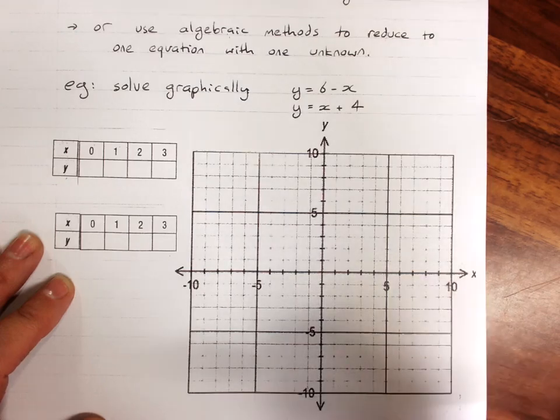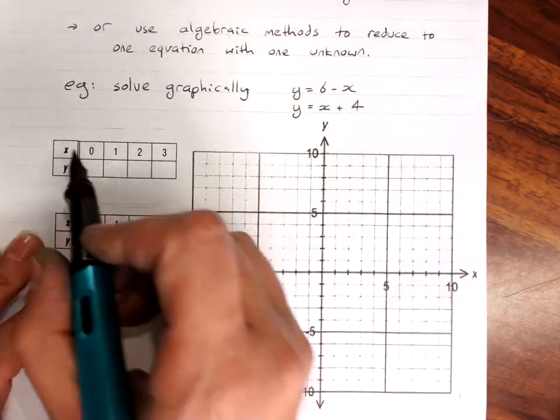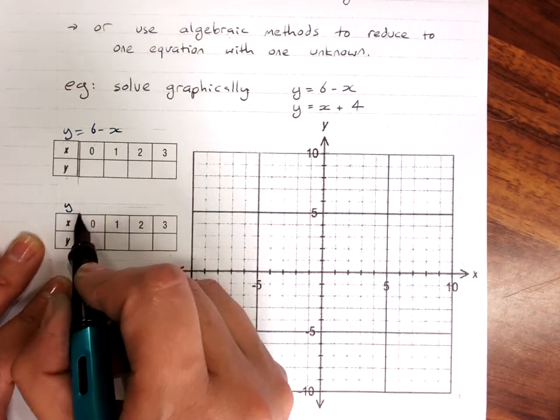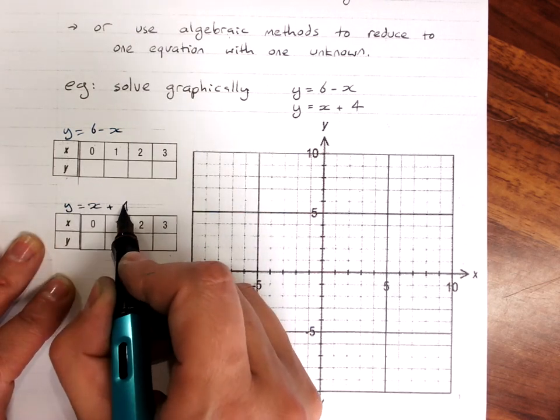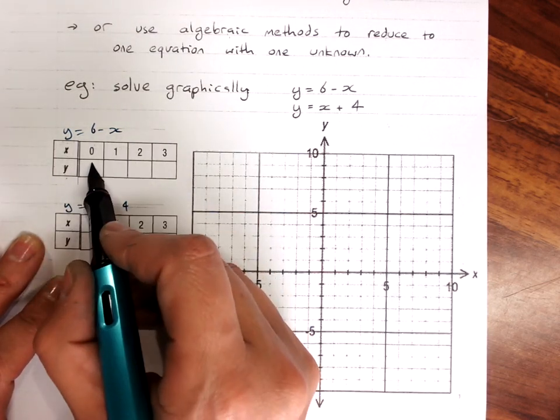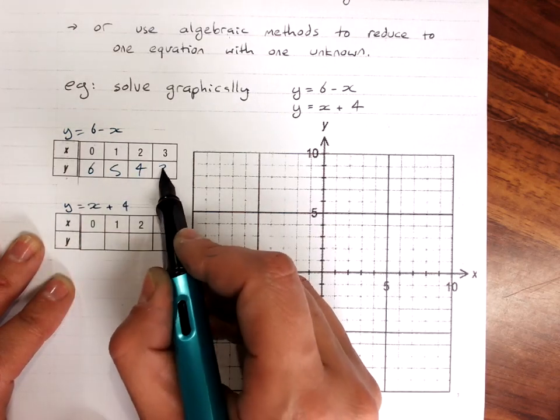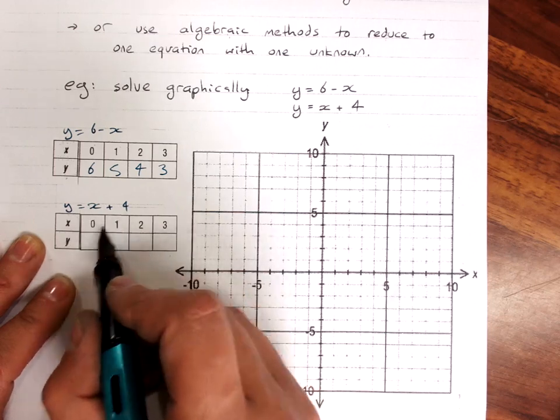It's a very easy one. I'm still going to show you all the steps that you require. To graph them, graph each one using a table of values. So, 6 minus 0, 6 minus 1... x plus 4.